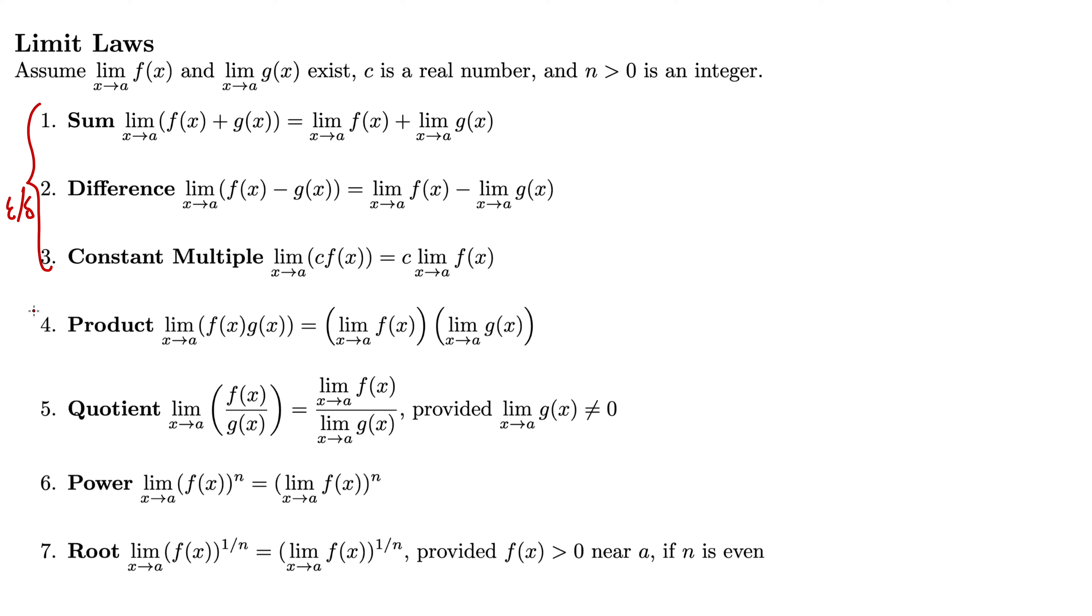These two are a little harder to prove. You can find proofs of these in the appendix of our book and a lot of calculus books. So I will refer you to that and not prove them here. Number 6 is the power limit law. That just says that the limit as x goes to a of f(x) to the n is the same as the quantity of the limit as x goes to a of f(x) all raised to the n. So essentially, this limit comes inside the n power.